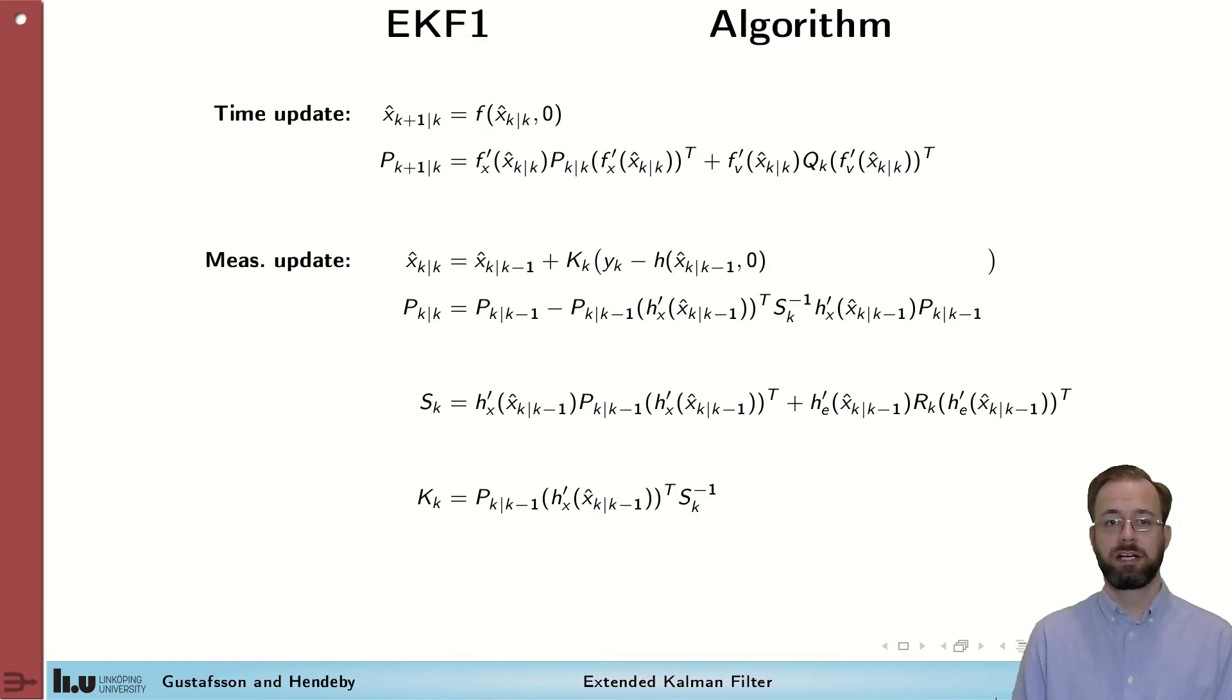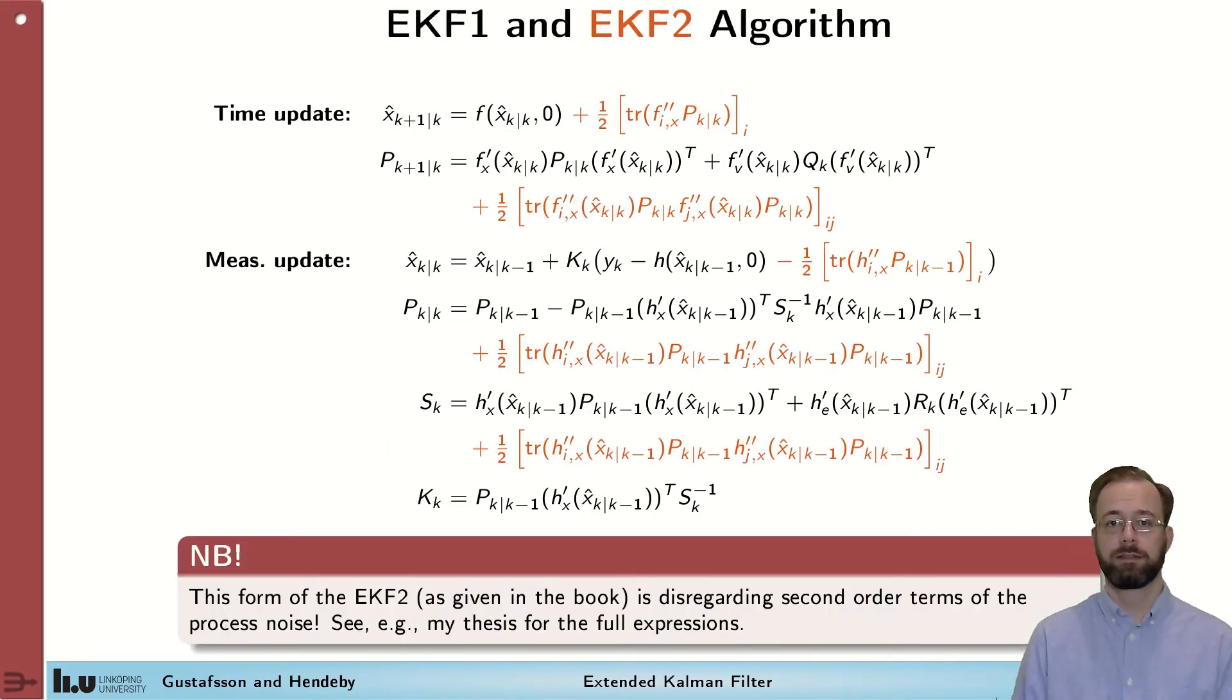So we'll summarize, and this slide is a bit messy, but I want to show you the exact expressions for the EKF1 first. You see the time update here, it's exactly the expressions that we stated on the previous slides, and the measurement updates. Then we add the second order effects, and we get this. So from the EKF2, we get the compensation in the time update step. It blows up the covariance matrix, and in the same way here, we actually blow up the innovations and the resulting covariance matrix here.